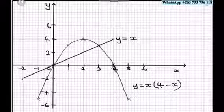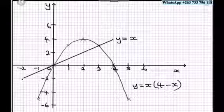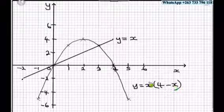So in the last lesson, we drew the graph of the line y equals x and the curve y equals x(4 minus x).